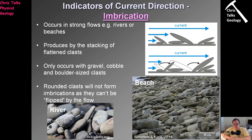The final type of sedimentary structure that helps us work out the direction sediment was transported is called imbrication. Imbrication is produced by a strong flow causing pebbles to become stacked one on top of another. This works best in environments where pebbles are disk-shaped — flat and broad. You don't really get imbrication with spherical clasts. As water comes across randomly orientated pebbles, it flips them, so one pebble ends up stacked on top of another all across the area.